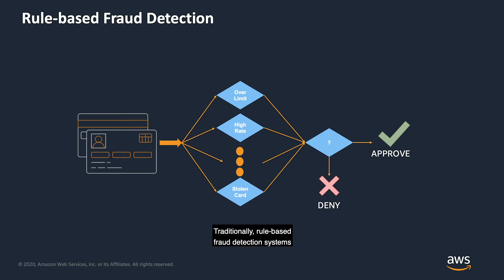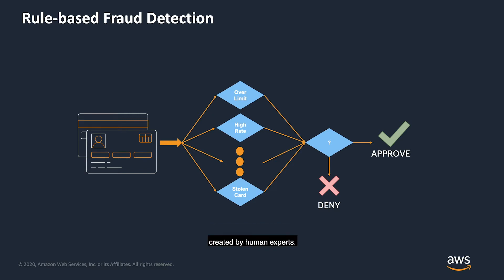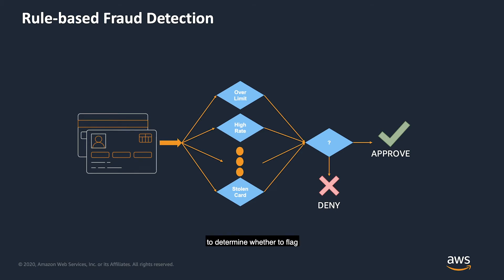Traditionally, rule-based fraud detection systems have been used to combat credit card fraud. These systems rely on a static set of rules created by human experts. In this case, experts create a complicated set of conditions to determine whether to flag a transaction as fraudulent.